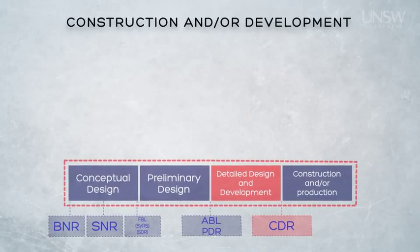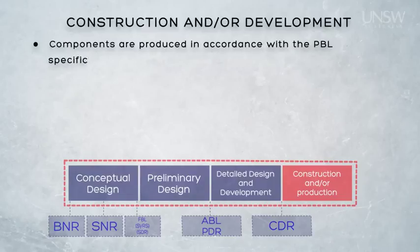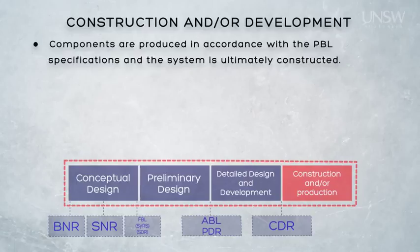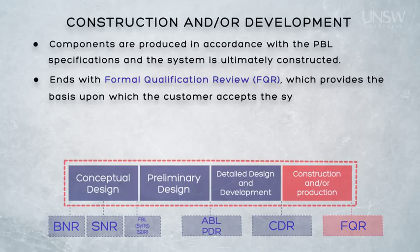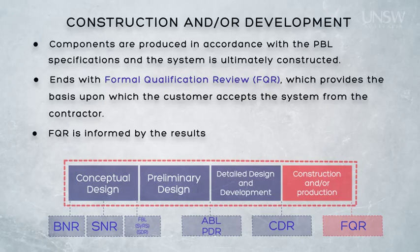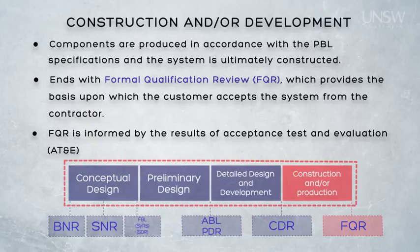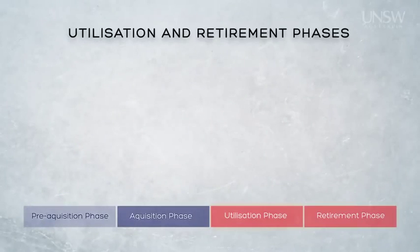The final activity within the acquisition phase is construction and production. Components are produced in accordance with the detailed design specifications laid out in the product baseline, and the system is ultimately constructed in its final form. Formal test and evaluation activities, called acceptance tests, are conducted to ensure the final system configuration meets the requirements in the system requirements specification. Construction and production — and the acquisition phase — ends with the formal qualification review, often also called the acceptance test, which provides the basis upon which the customer accepts the system from the contractor. The FQR is informed by the results of acceptance test and evaluation, or AT&E.